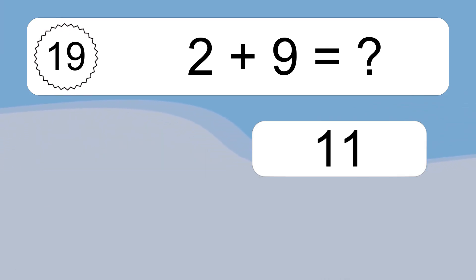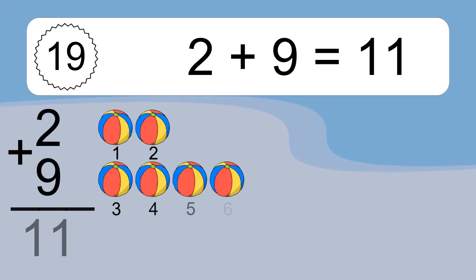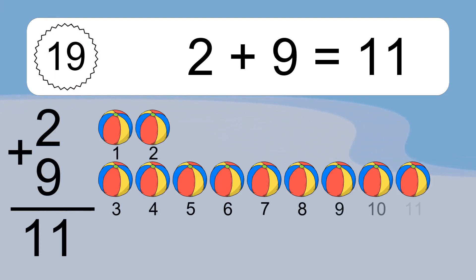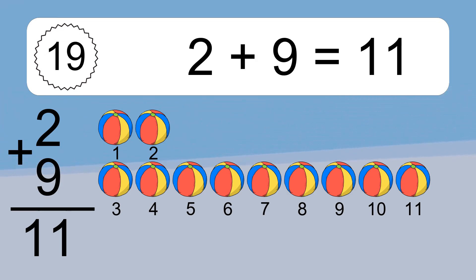13, 14, 15, 16. 2 plus 9 equals what? 2 plus 9 equals 11. Let's count it: 1, 2, 3, 4, 5, 6, 7, 8, 9, 10, 11.